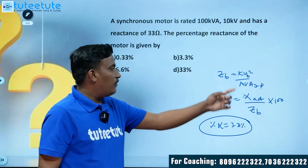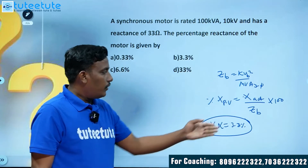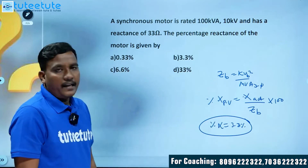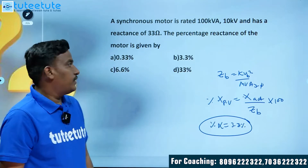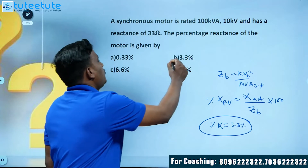By substituting the given values, X = 3.3%. The answer is option B.